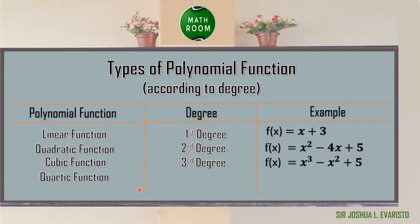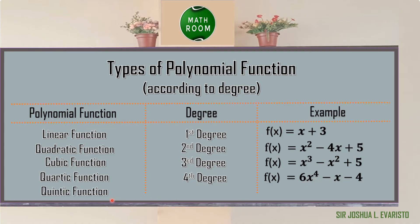Next is the quartic function, where the degree is 4. Example: f(x) = 6x⁴ − x − 4, where the leading term is 6x⁴. We also have the quintic function, where the degree is 5. Example: f(x) = 6x⁵ − 2x³ − 5x², where the leading term is 6x⁵.